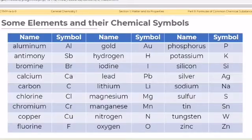Shown in this table is a list of some elements and their corresponding chemical symbols. We have aluminum Al, antimony Sb, bromine Br, calcium Ca, carbon C, chlorine Cl, and so on.